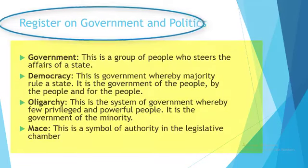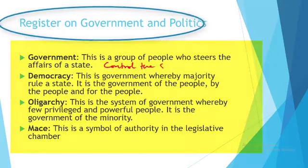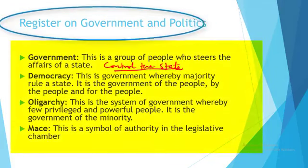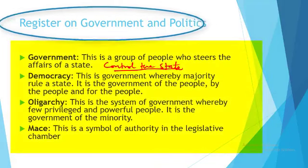Now let's move on to our register on government and politics. Government is a machinery that seeks to control the state. Democracy is the government whereby the majority rule a state — that is, people choose their leaders.